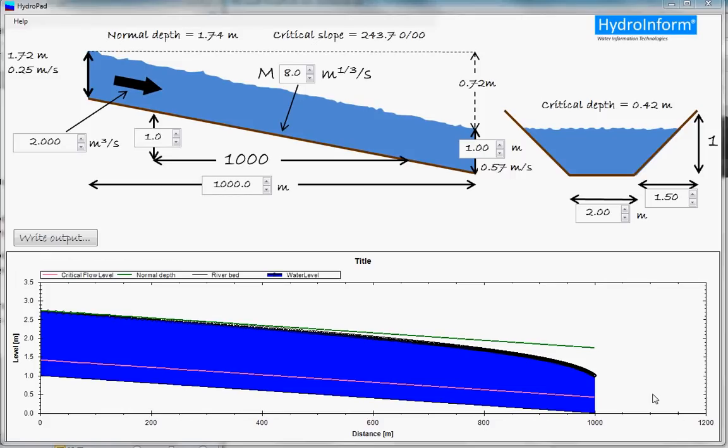HydroPad is limited to a prismatic channel, which is a channel where the same cross-section applies to the whole channel. The flow is steady state, and you can only use Trapitz zoidal cross-sections. So, HydroPad cannot replace the more advanced models.